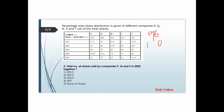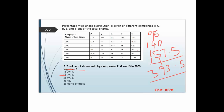Company S in 2003: 45 percent of 350. We can calculate 45 percent as 50 percent minus 5 percent: 50 percent of 350 is 175, minus 5 percent which is 17.5, giving 157.5. Adding the totals for P, Q, and S: 140 + 96 + 157.5 gives 393.5. The answer is option 2.